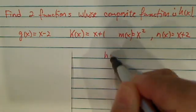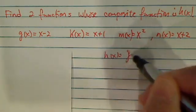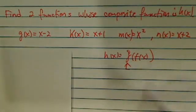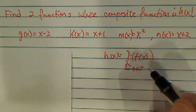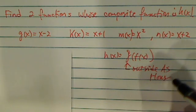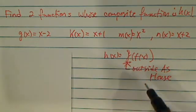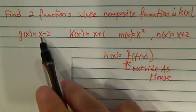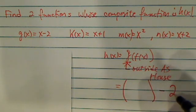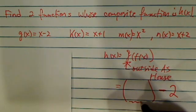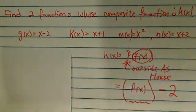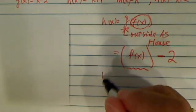Now as you remember composite function h of x is a function of a function. The way you do it, you use the outside one as the house. So what we mean by that, let's take a look at g. g of x is x minus 2. So the way you set it up, is whatever is in there minus 2 and whatever you put in here is what the guts of it. So we'll put an f of x here.